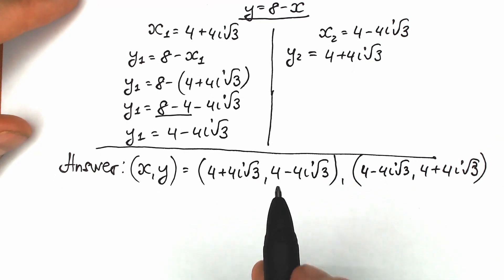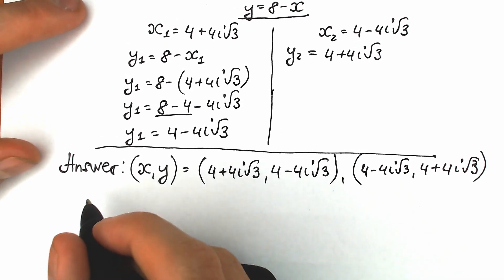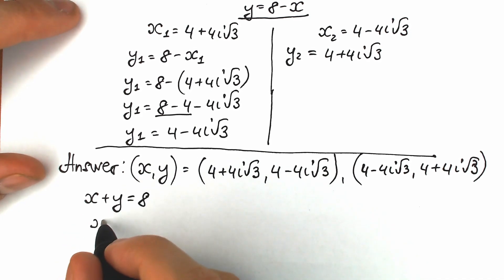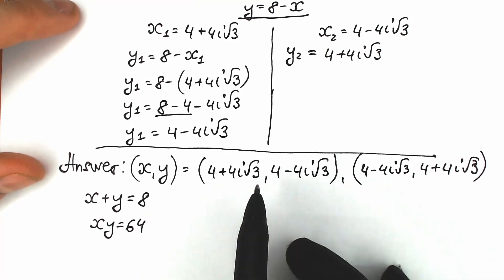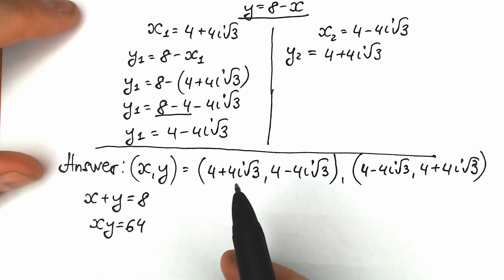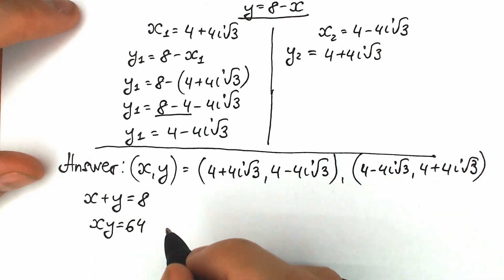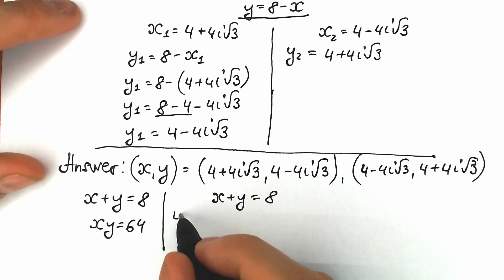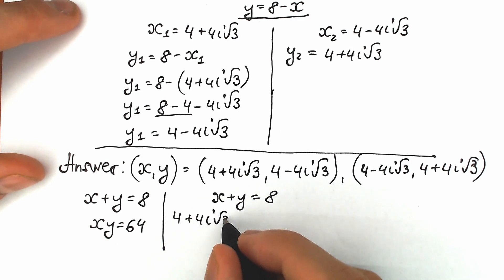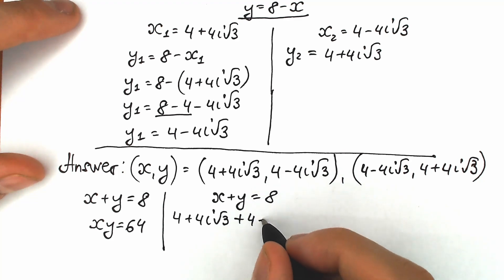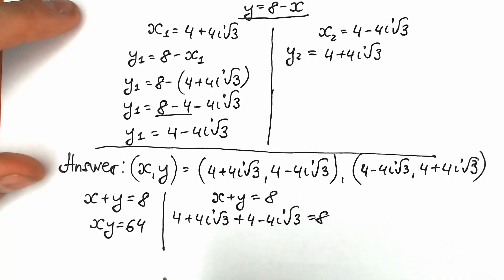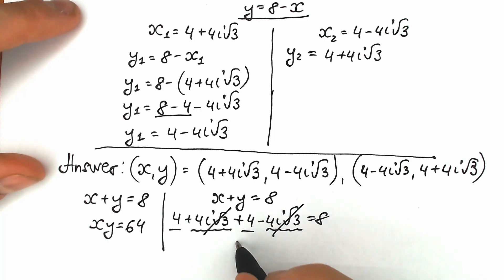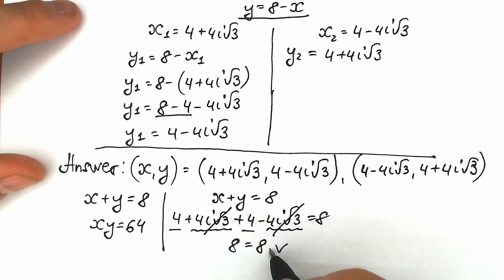Let's check our answers. We know x plus y must equal 8, and xy must equal 64. Let's check with the first pair using addition: (4 plus 4i√3) plus (4 minus 4i√3). The 4i√3 and minus 4i√3 cancel, and we have 4 plus 4 equals 8. So 8 equals 8 — everything is correct with the first equation.